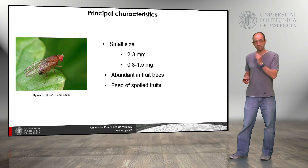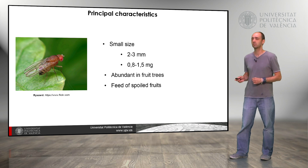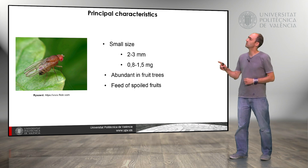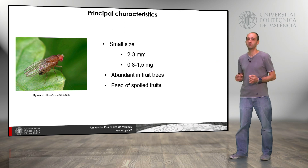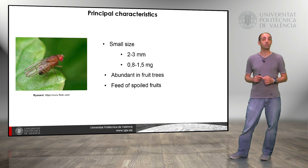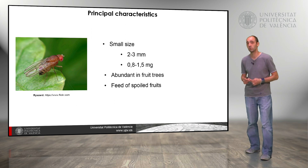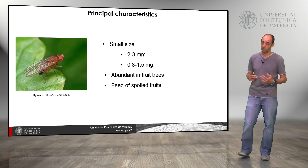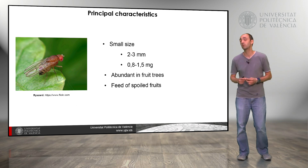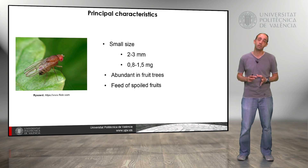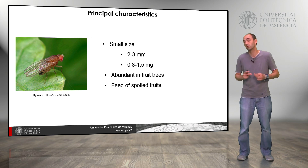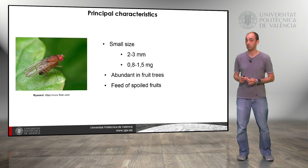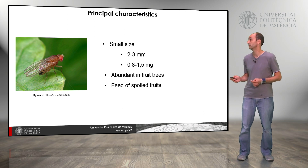The size is very small and it weighs around 0.8 and 1.8 milligrams. It is abundant in fruit trees and feeds on or spoils their fruits. If we leave a fruit to spoil, some insects will appear — Drosophila will probably be one of them. It is not considered a pest like other insects, for example the Mediterranean fruit fly, which is a pest in orange trees.